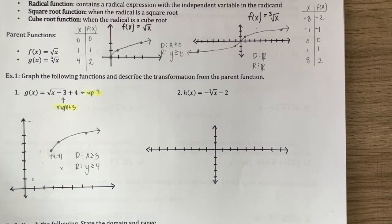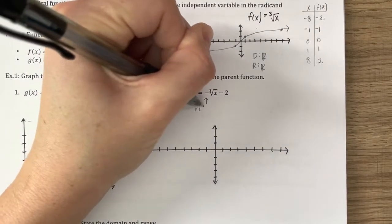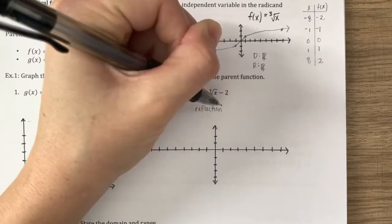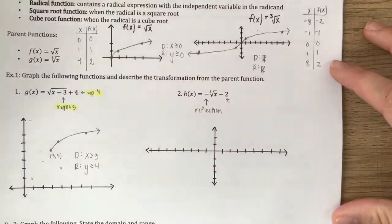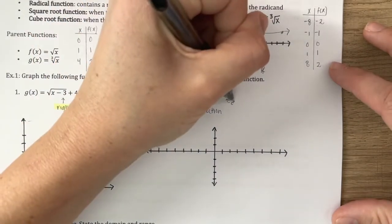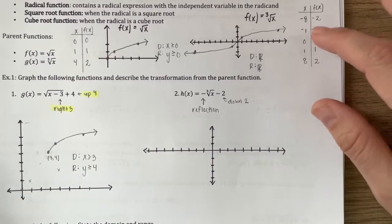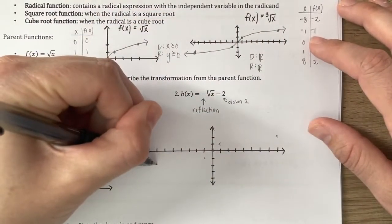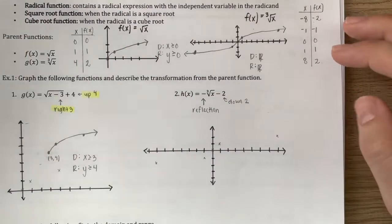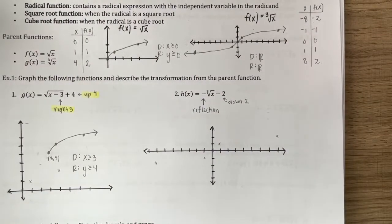For number 2, h(x) equals negative times the cube root of x, minus 2. The negative out in front means a reflection over the x-axis — it flips the graph over. The minus 2 outside the cube root is a shift down 2, or a translation down 2. With order of operations, we multiply by the negative first and then translate down, so we reflect first and then translate down.